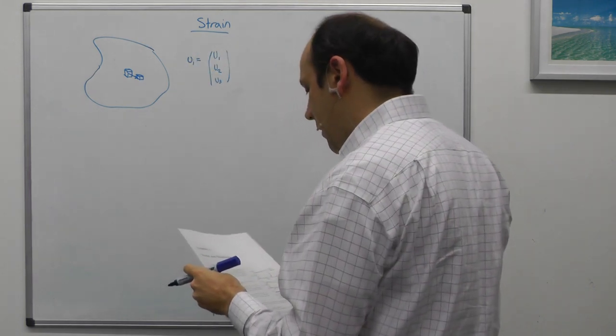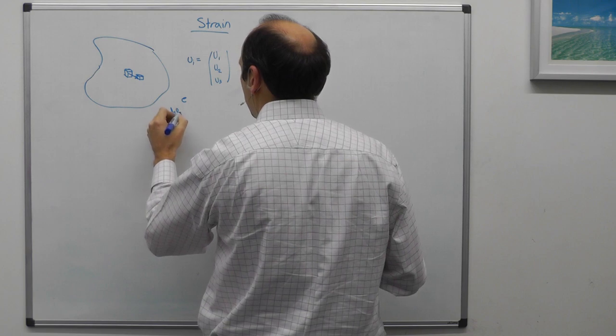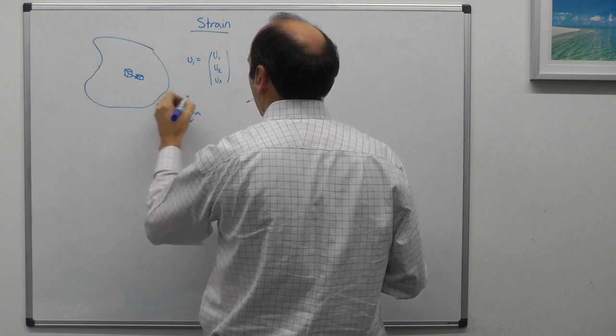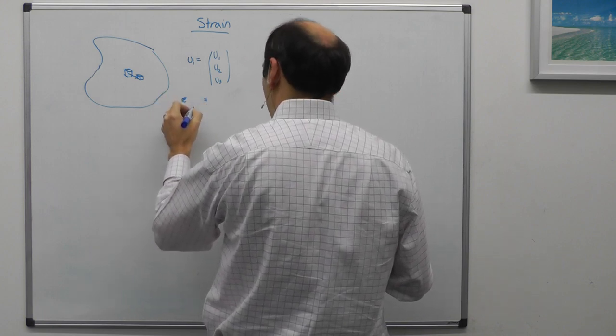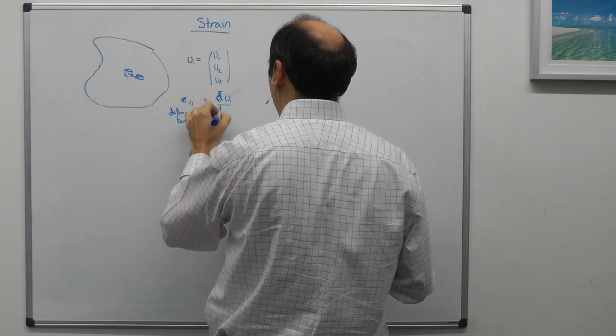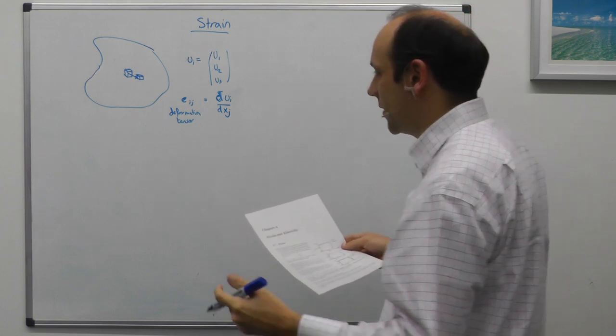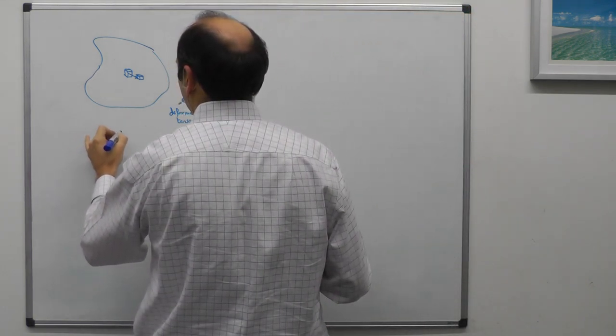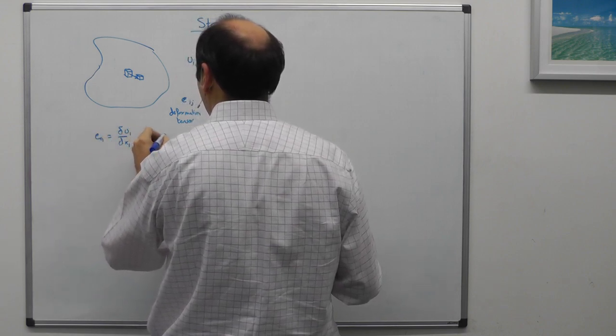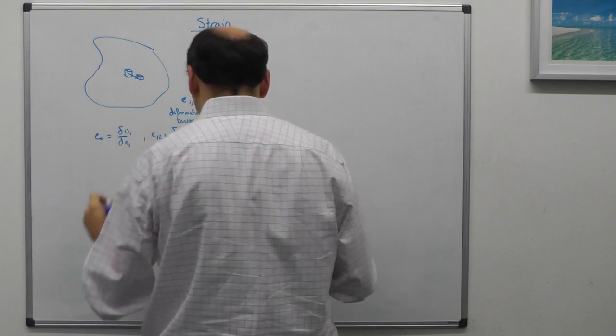And we define the deformation tensor e, so this is our deformation tensor e, as being eij is partial ui by position basis vector xj. So it's a tensor, so e11 is equal to partial u1 by dx1, e12 is partial u1 by dx2, and so on.